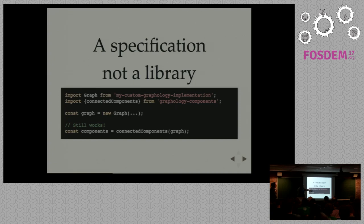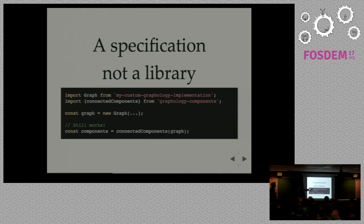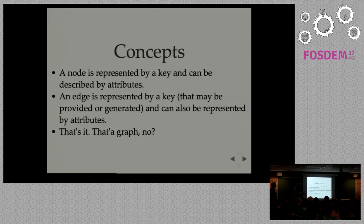For example, you can have a custom Graphology implementation built on top of C++ for Node.js. And here you have a function from the Graphology standard library which extracts connected components. That function will still work on your particular implementation of the graph because it's the same API. That's why we have a specification and not a library.